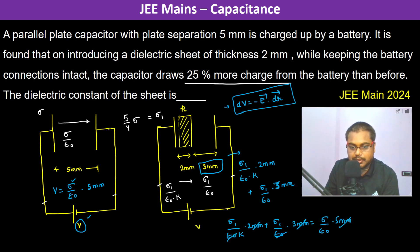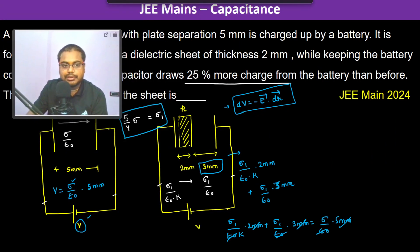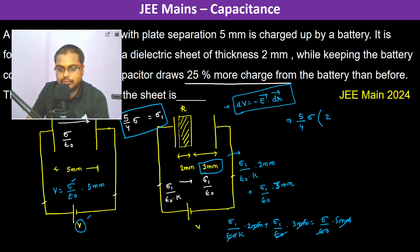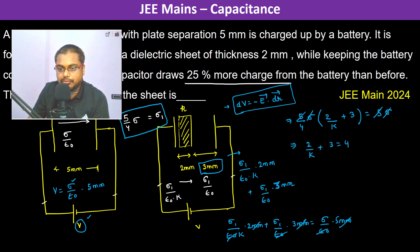Epsilon naught cancels from both sides. Substituting Sigma one equals five-fourths of Sigma, we get: five-fourths times Sigma times the quantity two divided by K plus three equals five times Sigma. Sigma also cancels, giving two divided by K plus three equals four. Therefore K equals two.